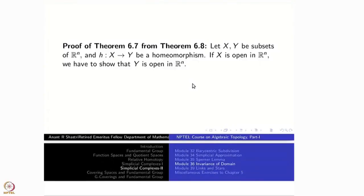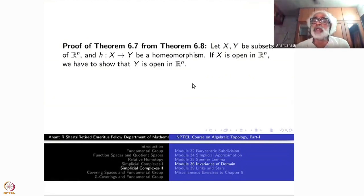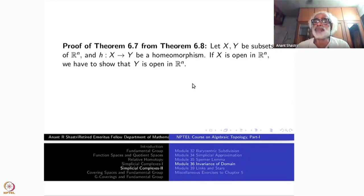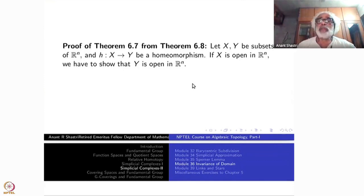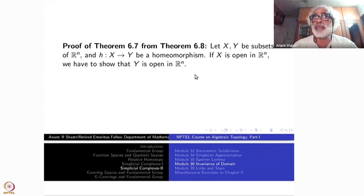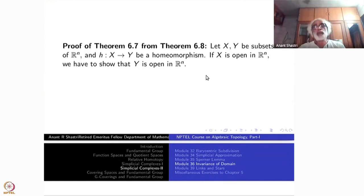On the way to proving Brouwer's invariance of domain, we proved a topological criterion for a point of a subset of R^n to be an interior point of the subset. That was Theorem 6.8. Using that theorem, let us complete the proof of Brouwer's invariance of domain, which is now very easy. After that, we need to complete the proof of the controlled homotopy lemma. Then the entire proof of Brouwer's invariance of domain will be completed. So let us start proving the final Theorem 6.7.